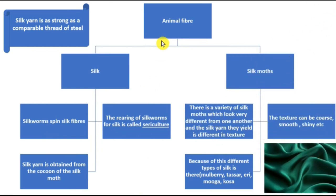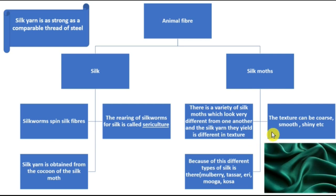Now moving on to another animal fiber: silk. Silkworms spin silk fibers from which we obtain silk. The rearing of silkworms for silk is known as sericulture — a really important term. Silk yarn is obtained from the cocoon of the silk moth. There are a variety of silk moths which look very different from one another, and the silk yarn they yield is different in texture — it can be coarse, smooth, shiny, etc.